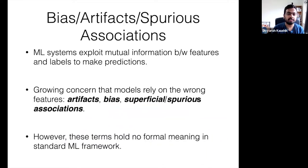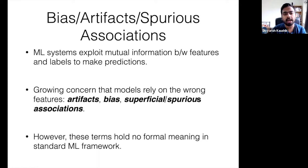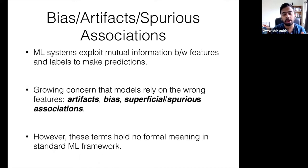For years, our community has been training models successfully to exploit any signal in the input data to make accurate predictions that generalize even to unseen data from the same distribution. However, researchers and the public more broadly have grown alarmed that these models do not know what truly makes a label applicable, instead relying on any signal, including so-called spurious associations, to make accurate predictions.